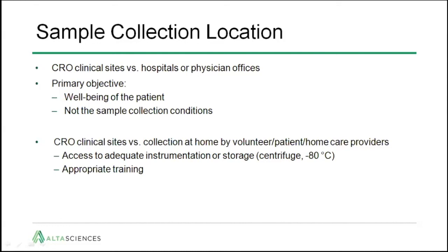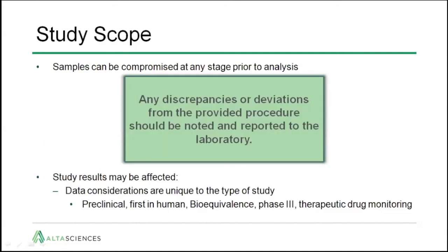Therefore, the simpler the sample collection procedure is, the better it will be for the reliability of your data. Samples can be compromised at any stage prior to analysis, and therefore any discrepancies or deviations from the provided procedure should be noted and reported to the laboratory. The study results may be affected by these discrepancies, and the data considerations are unique to the type of study — whether preclinical, first in human, bioequivalent phase three, or therapeutic drug monitoring — these discrepancies may have different impacts on your study results.